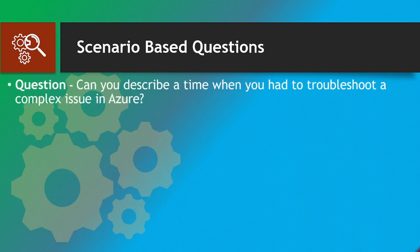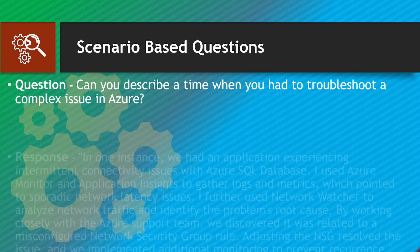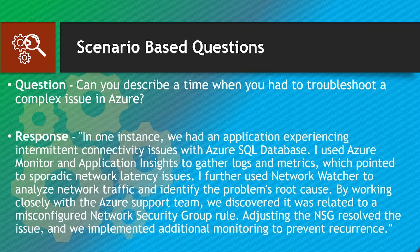Can you describe a time when you had to troubleshoot a complex issue in Azure? In one instance, we had an application experiencing intermittent connectivity issues with Azure SQL Database. I used Azure Monitor and Application Insights to gather logs and metrics, which pointed to a sporadic network latency issue. I further used Network Watcher to analyze network traffic and identify the root cause. By working closely with the Azure support team, we discovered it was related to a misconfigured Network Security Group rule. Adjusting the NSG resolved the issue, and we implemented additional monitoring to prevent recurrence.